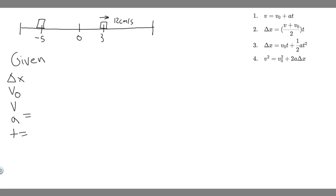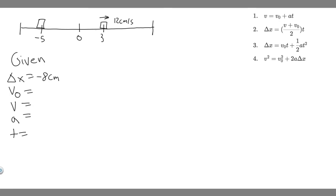Delta x is your change in position. In this problem, in the beginning it's at 3 centimeters and traveling 12 centimeters per second. Then it ends up at minus 5. So its change in position: it starts at 3 and goes to minus 5, changing 8 centimeters. Since it's going to the left, delta x is minus 8 centimeters — because 3 plus 5 is 8, so we're changing 8 centimeters to the left.